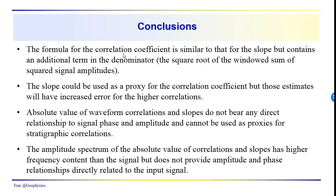So what conclusions can we draw? The formula for the correlation coefficient is similar to that for the slope, but contains an additional term — the square root of the windowed sum of squared amplitudes. The slope could be used as a proxy for the correlation coefficient, but the absolute values of correlations and slopes could provide higher structural resolution while not being very good for stratigraphic correlations. The amplitude spectra do enhance high frequency content, but whether that translates into increased resolution of velocity and density contrasts in the subsurface is questionable.